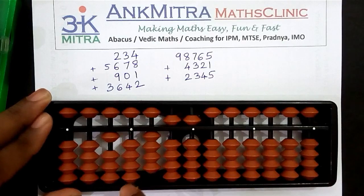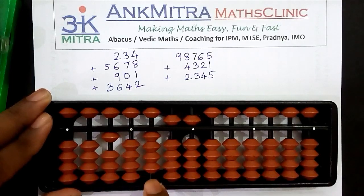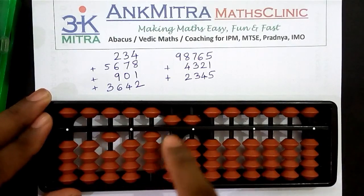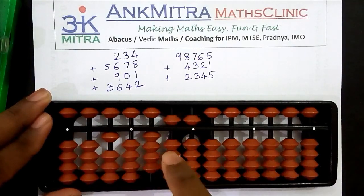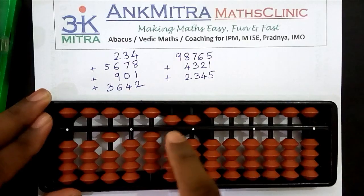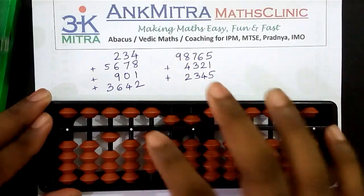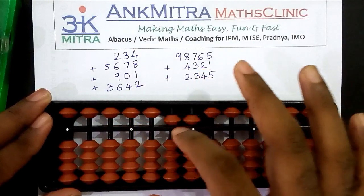The final answer for the addition of all four numbers is ten thousand four hundred and fifty-five — that is 1, 0, 4, 5, 5 — ten thousand four hundred and fifty-five.